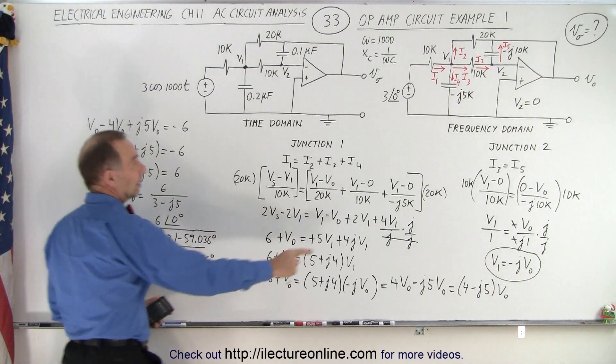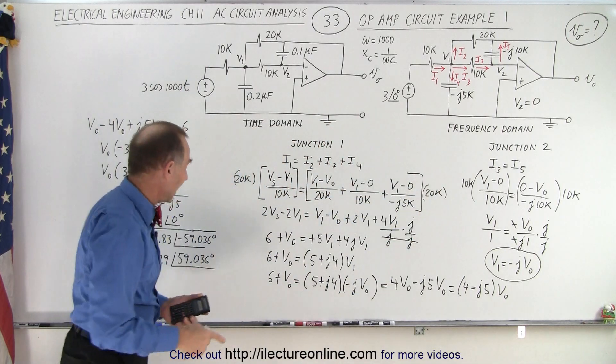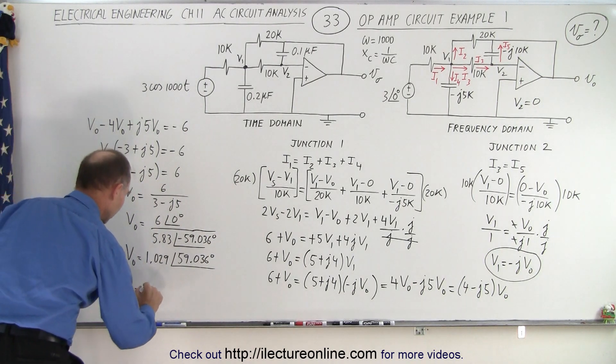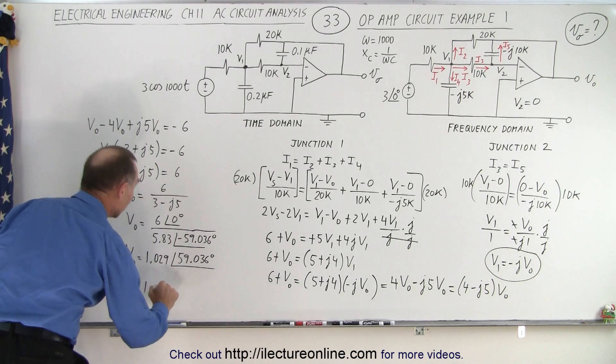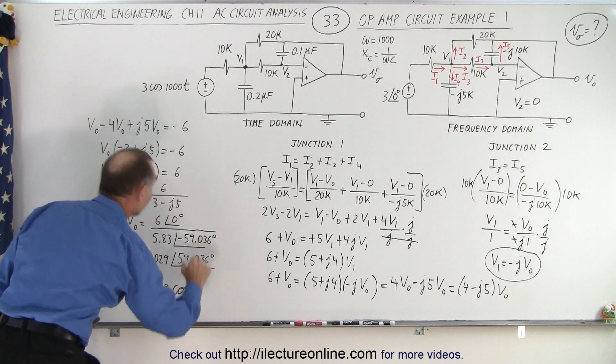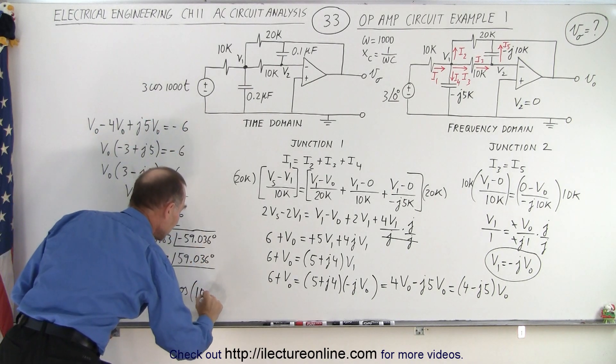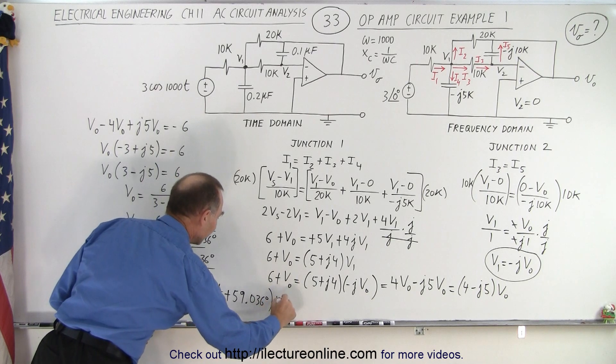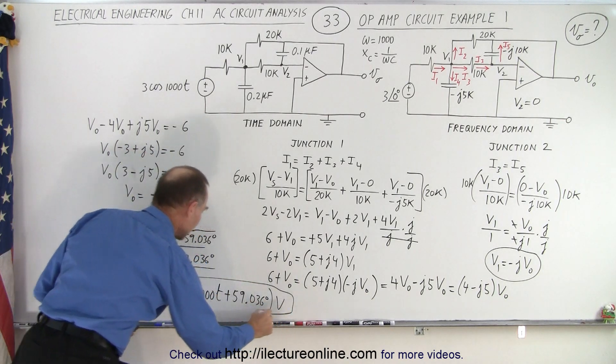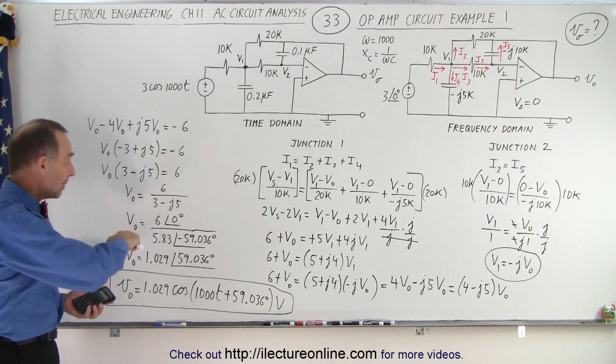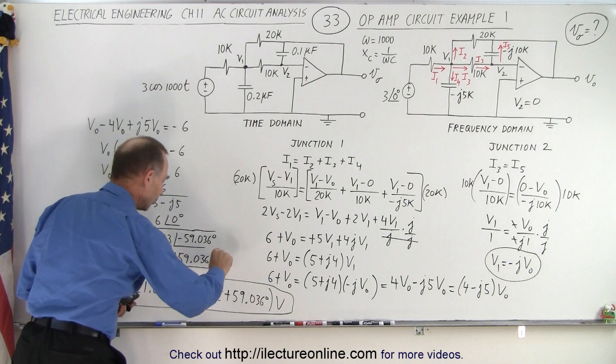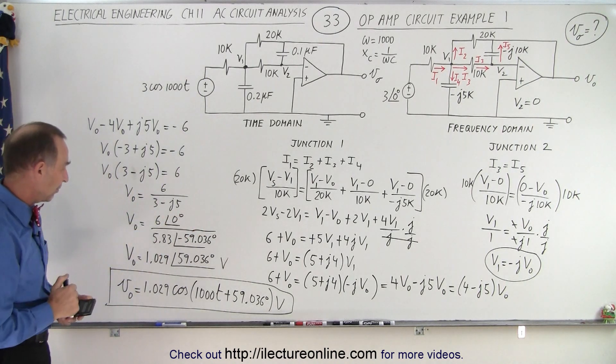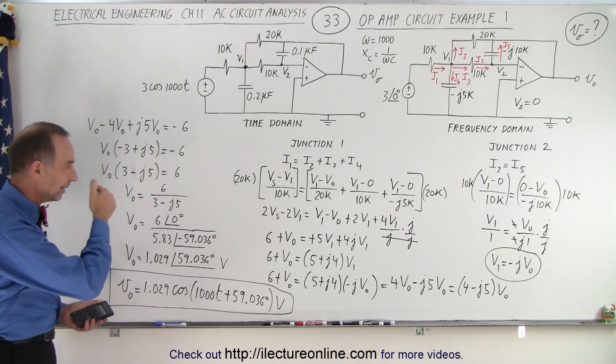Now that, of course, is the answer in the frequency domain, but now we want to go back and get the answer in the time domain. So that means that the output voltage is equal to the amplitude, 1.029 times the cosine of omega t, which is 1000t, plus the phase angle, plus 59.036 degrees. That's in volts, and there you go, that is now the output voltage of the operational amplifier in the time domain. This, of course, is the output voltage in the frequency domain. And so that's how we use the same principles that we used before, but on an operational amplifier circuit, to find the output voltage. And that is how it's done.